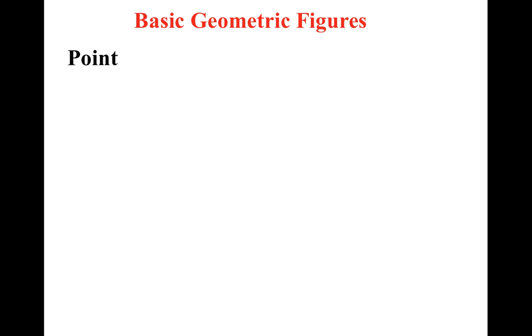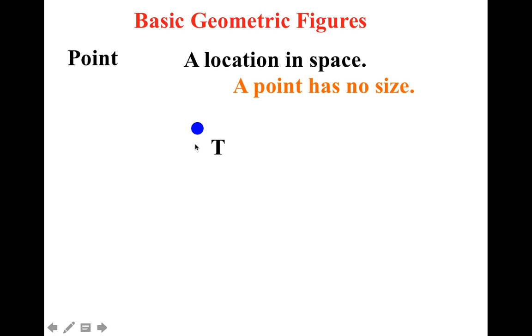All right, so in basic geometry we always start off with just a blank space, and then there has to be a point. That point that I labeled T is just a location in space. It's important to realize that it actually has no size. The only reason there's this big dot right here is because I wanted you to see where I wanted you to look, but the point itself has no size.